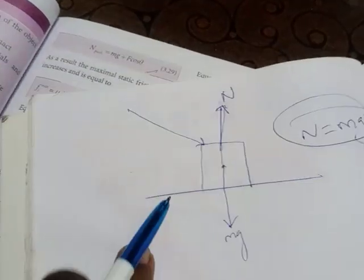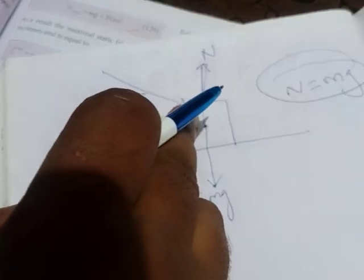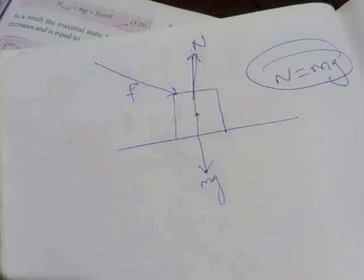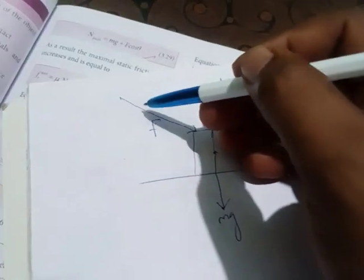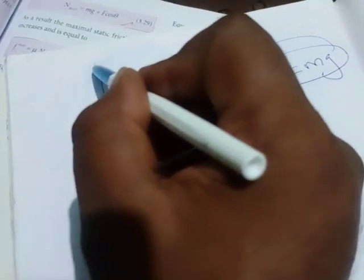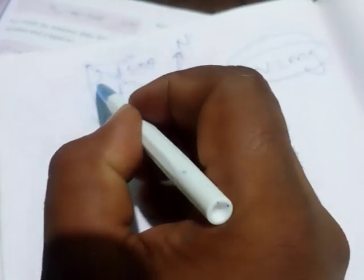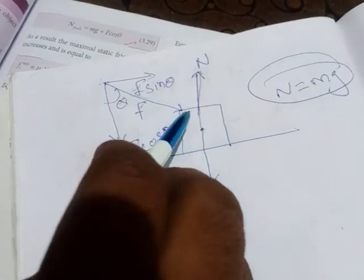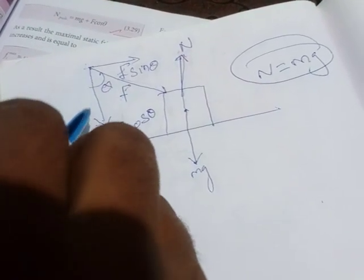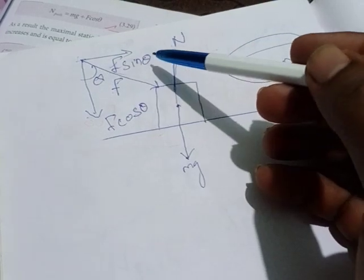Now you are applying an additional external force F at an angle theta on this object. This force F can be resolved into two components: F cos theta and F sin theta. F cos theta is the perpendicular component and F sin theta is the parallel component.